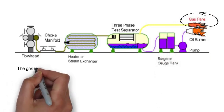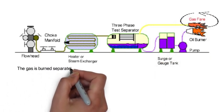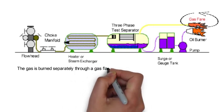The gas is burned separately through a gas flare located on the burner booms.